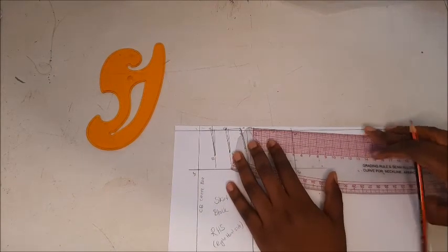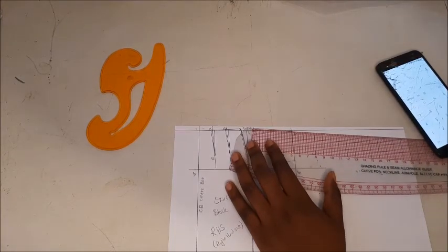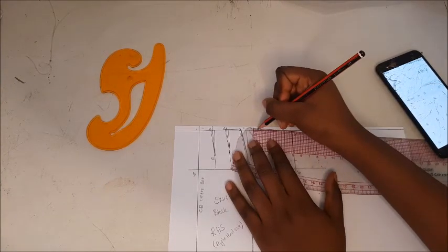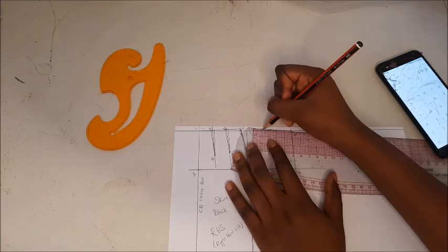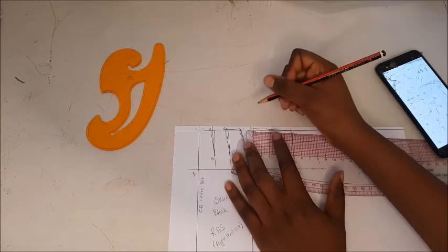Measure a third of the line 2 to 16 and mark point number 17, which then you will square down using that very same line that you drew earlier on. Make sure that it's perpendicular and this is where your dart is going to be positioned in front.